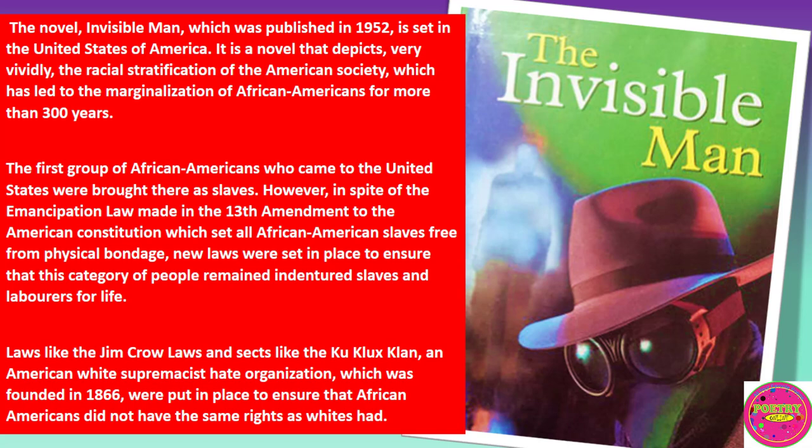The novel Invisible Man, which was published in 1952, is set in the United States of America. It is a novel that depicts very vividly the racial stratification of the American society, which has led to the marginalization of African Americans for more than 300 years. The first group of African Americans who came to the United States were brought there as slaves. However, in spite of the emancipation law made in the 13th amendment to the American constitution, which set all African American slaves free from physical bondage, new laws were set in place to ensure that this category of people remained indentured slaves and laborers for life.